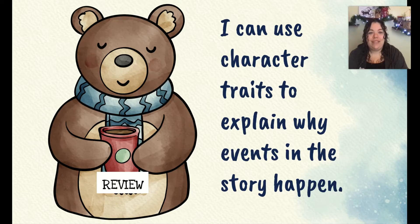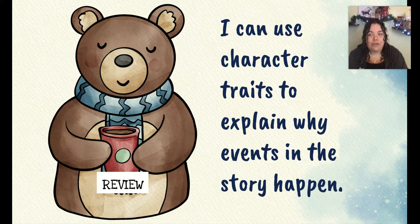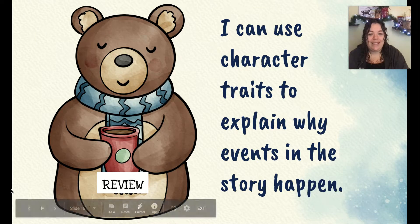Today we talked about using character traits like Miss Agnes' actions and what she says to explain why something in the story happens. Miss Agnes thinks it's important for Boko to go to school, and we showed actions like ordering the books, or things that she says like saying 'nonsense,' to prove and explain why those events are happening. See you next time.